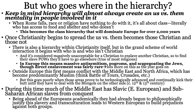But who goes where in this hierarchy? This is probably the most important thing to discuss. Keep in mind that a hierarchy will almost always create an us-versus-them mentality. When Rome falls, race or religion have almost nothing to do with it — it's almost all about class. It's literally who has access to food and shelter, who has access to swords, who can be protected from marauding knights and Vikings, and who cannot.